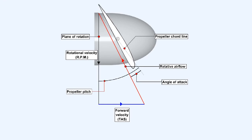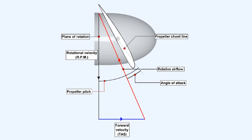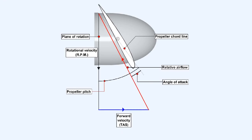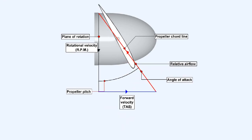From this animation, it can be seen that an increase in true airspeed will reduce the angle of attack, whereas an increase in rotational velocity or rpm will increase it. At high true airspeed and low propeller rpm, for instance with the aircraft in a power-off dive, it's possible to reduce the angle of attack to zero.